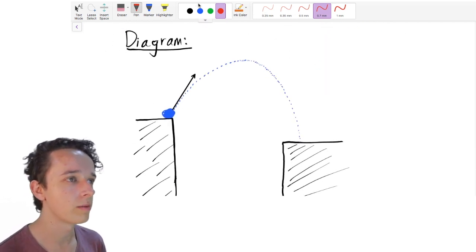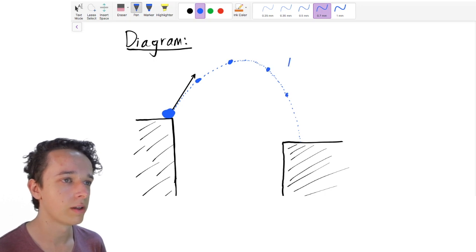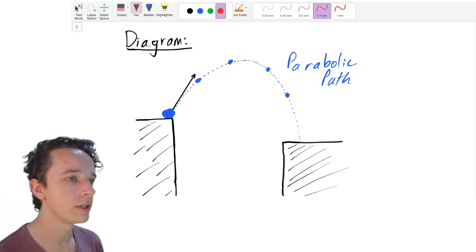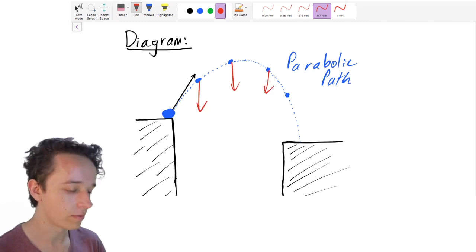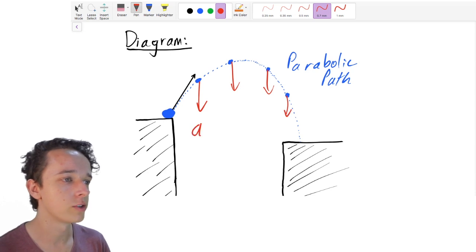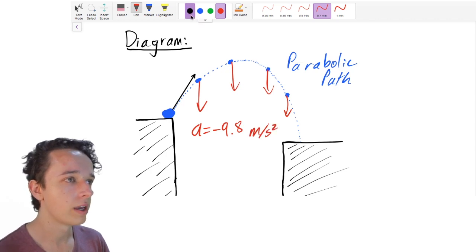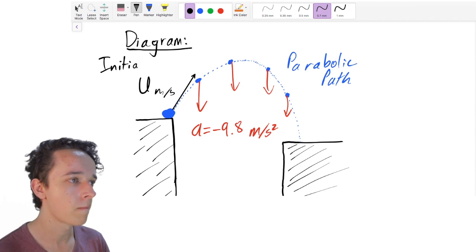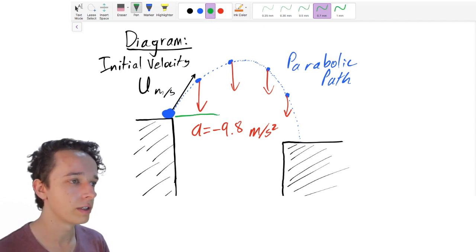So you can see that information in this diagram. You have a projectile represented by this blue ball here and it follows a parabolic path. And at each point in the projectile's motion, it's being subject to acceleration due to the force of gravity. And the magnitude of this acceleration we generally assume to be 9.8 meters per second squared. And the projectile is being launched with some initial velocity u meters per second. So this is an initial velocity.